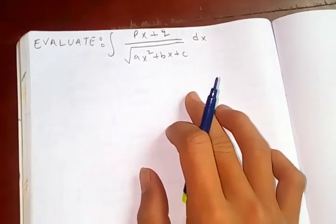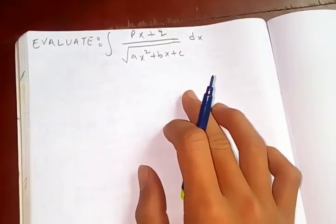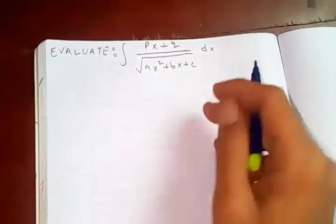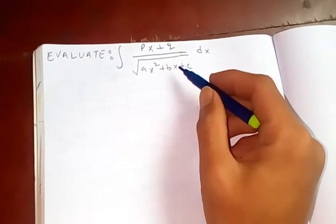That is integral of px plus q over square root of ax square plus bx plus c. If you see an equation like this, then first of all,